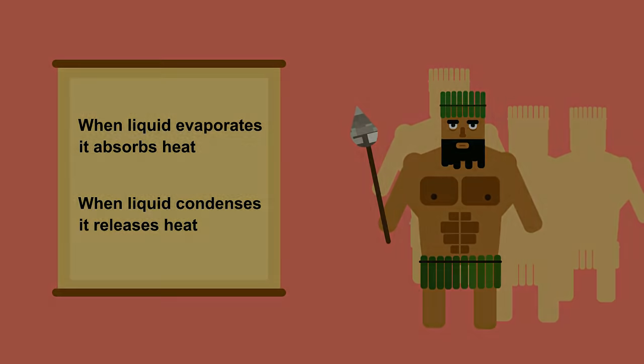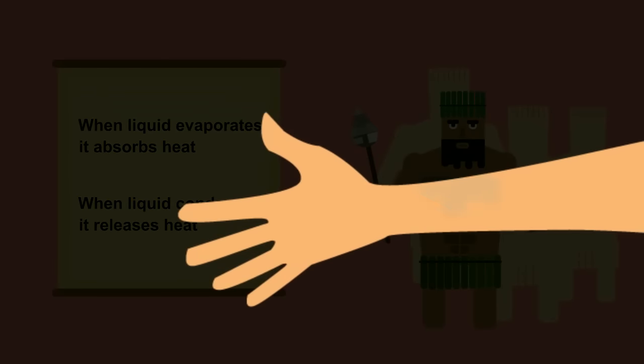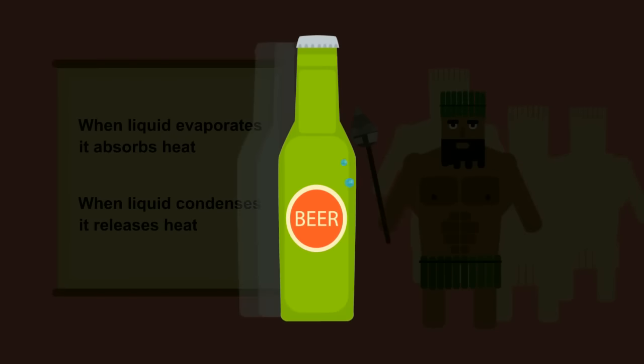A simple example is that when your hand is wet it feels cold. This is the process of the water evaporating and cooling your hand. On a very humid hot day, your frosty beer will have water condensing on the outside of the bottle. This warms your beer.